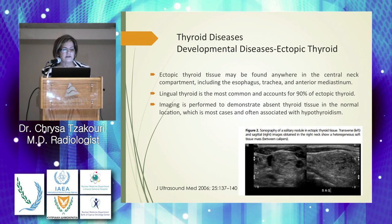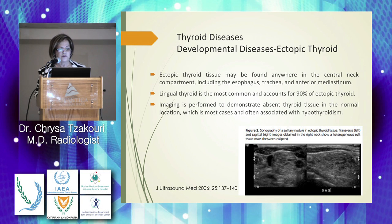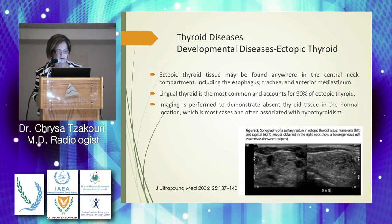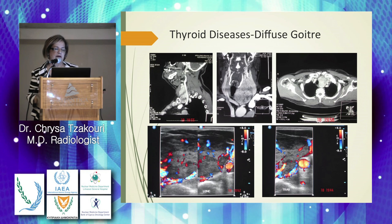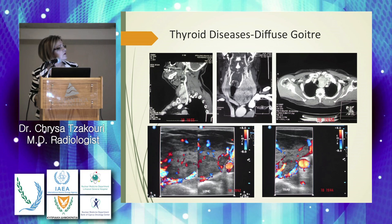Ectopic thyroid gland can be found anywhere in the central neck compartment, including the esophagus, trachea, and anterior mediastinum. The lingual thyroid is the most common, accounting for 90% of ectopic thyroid tissue. Imaging is performed to demonstrate absent thyroid tissue in the normal location, which is often associated with hypothyroidism. For diffuse goiter, a curvilinear transducer with lower MHz may be necessary to demonstrate the large lesion.